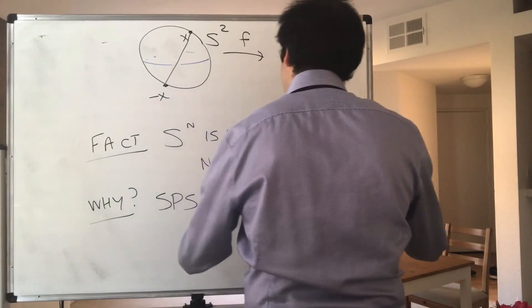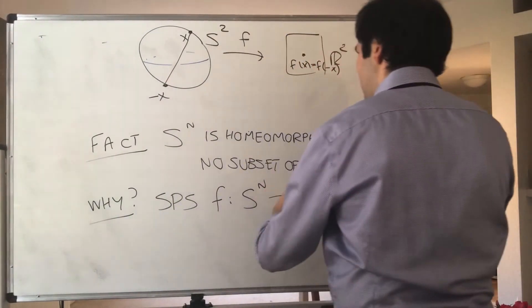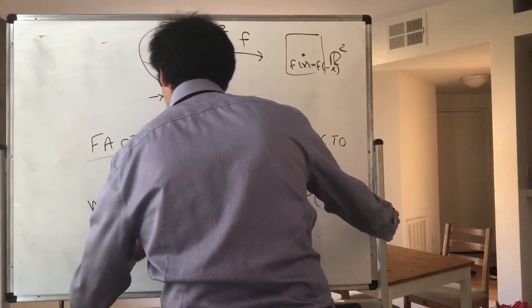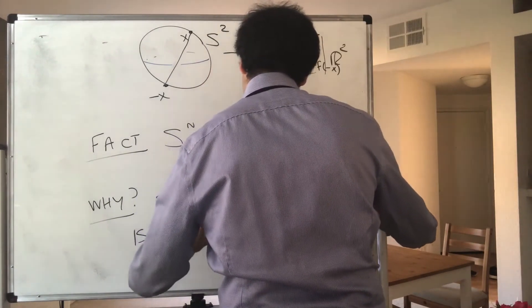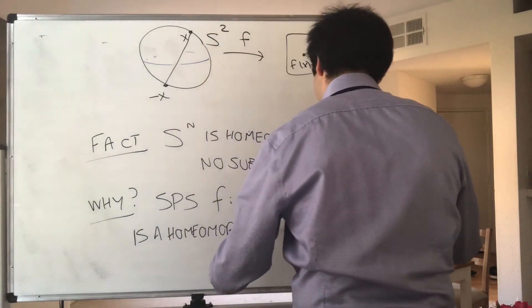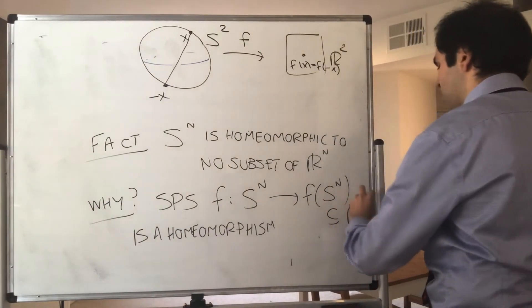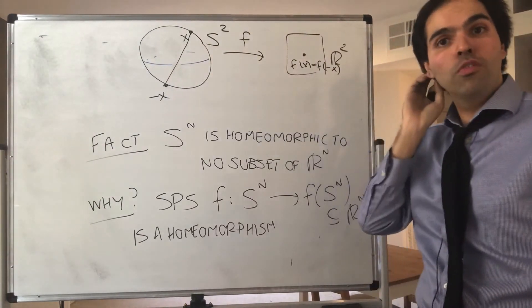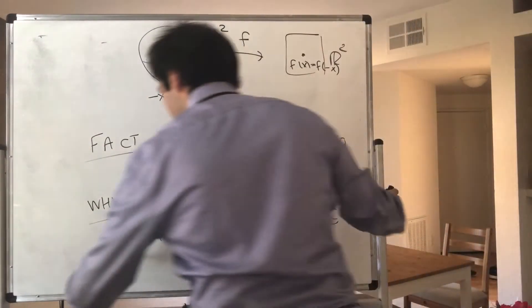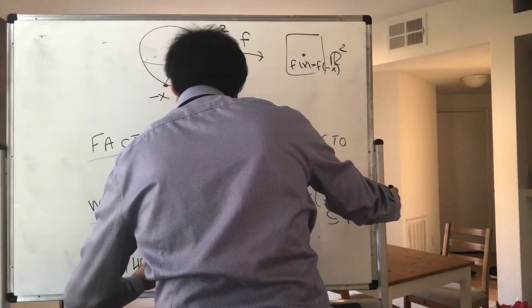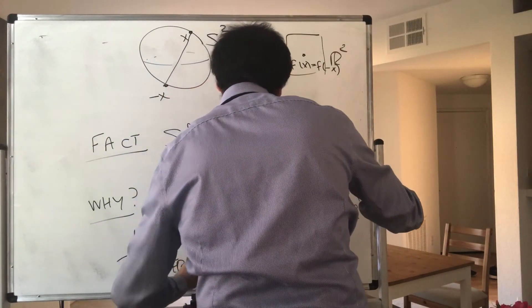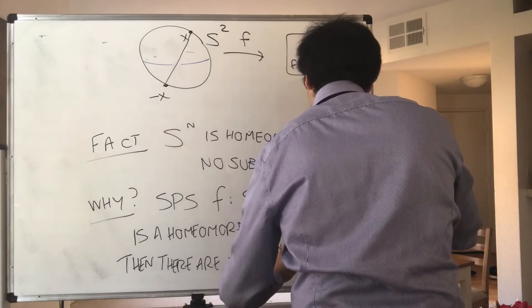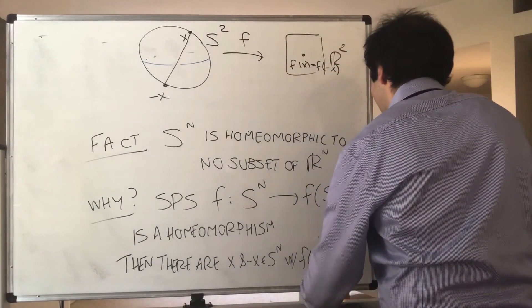Suppose f from Sⁿ to, let's say, f(Sⁿ), some subset of Rⁿ, is a homeomorphism. So suppose this is a subset of Rⁿ. Then we have a problem because we know that there are two antipodal points that have the same value. Then f is continuous, so there are x and minus x in Sⁿ with f(x) equals f(-x).